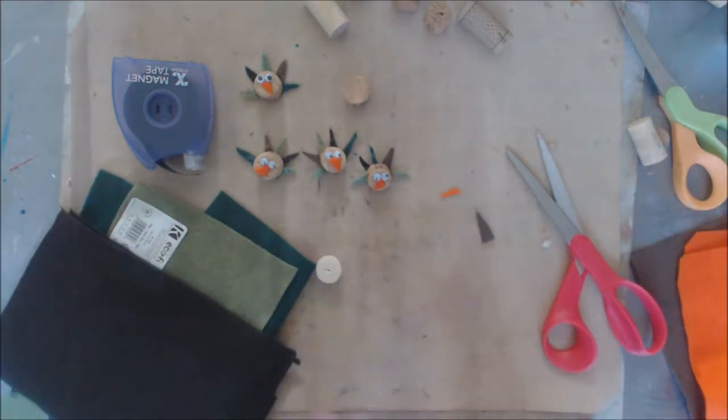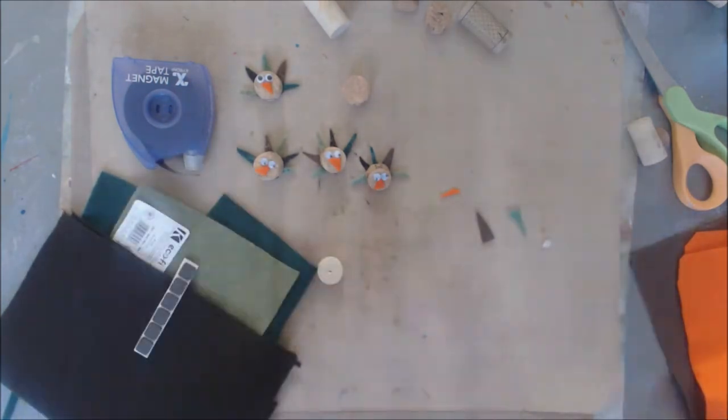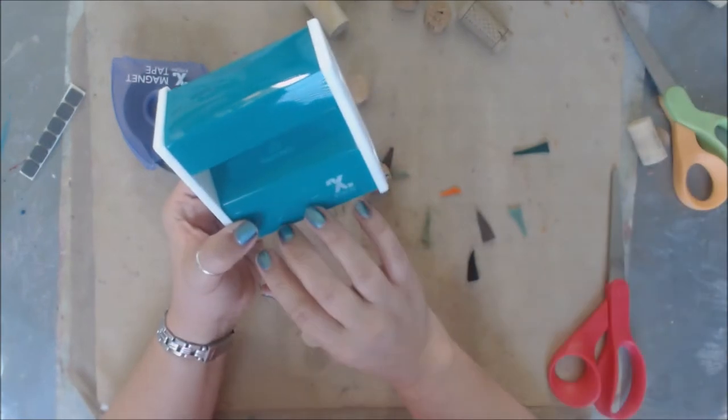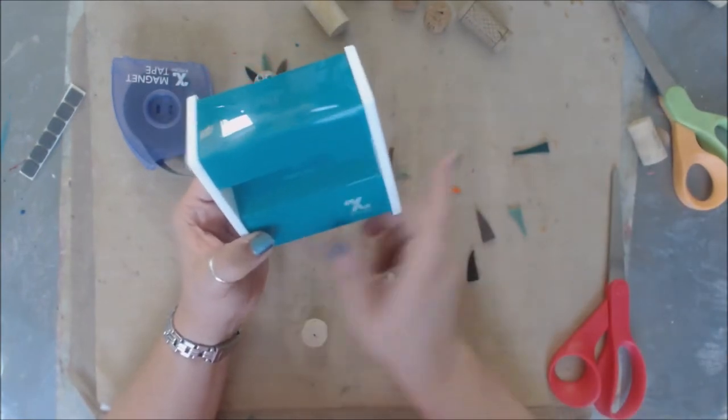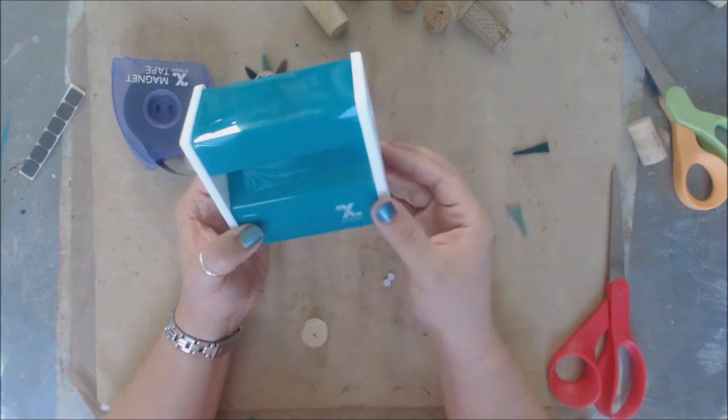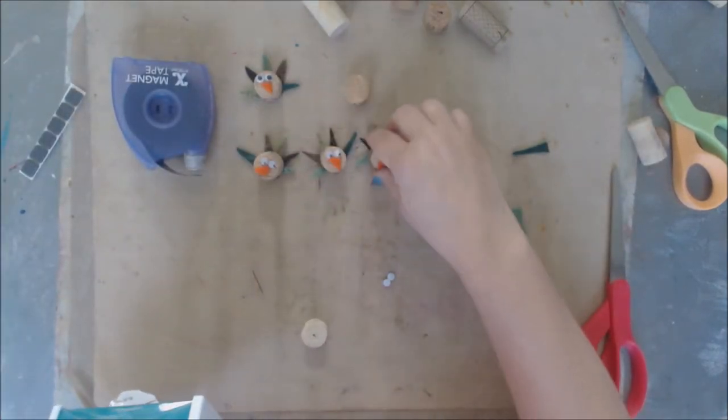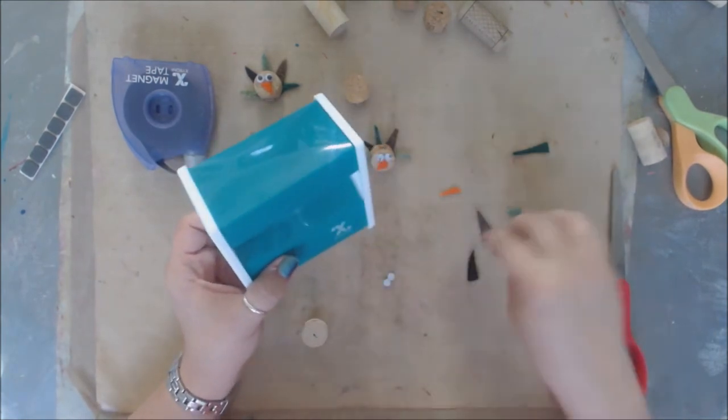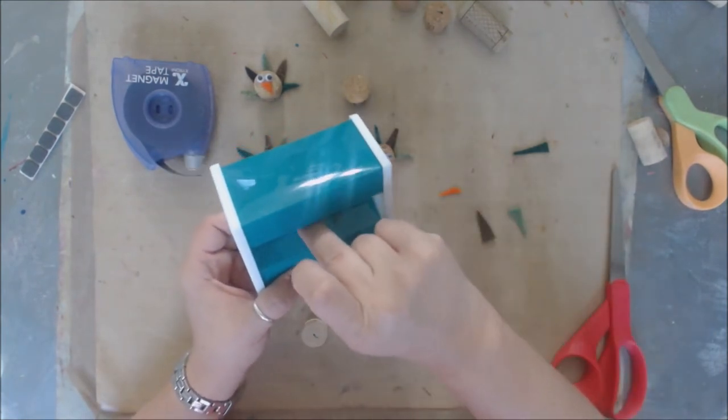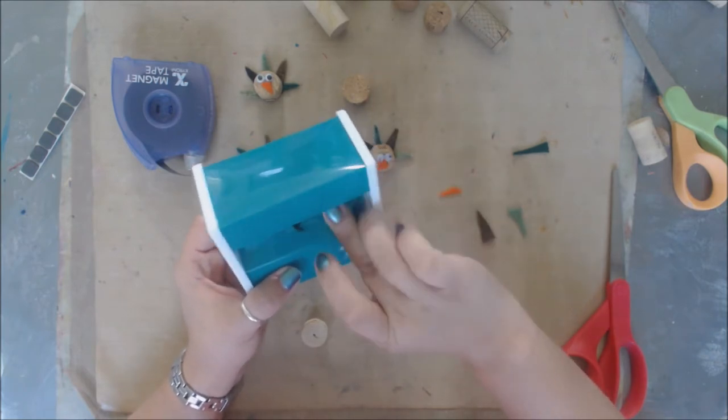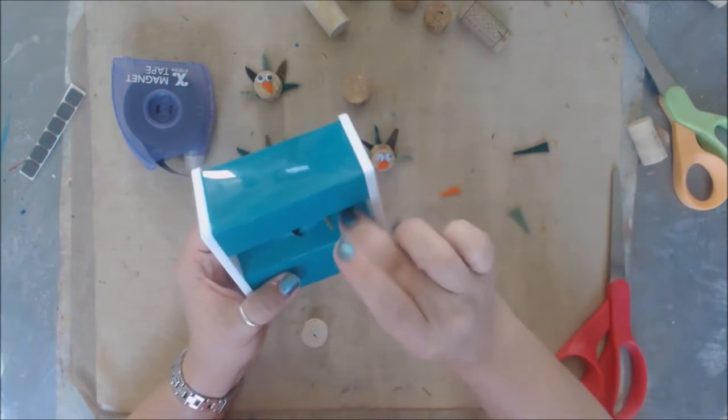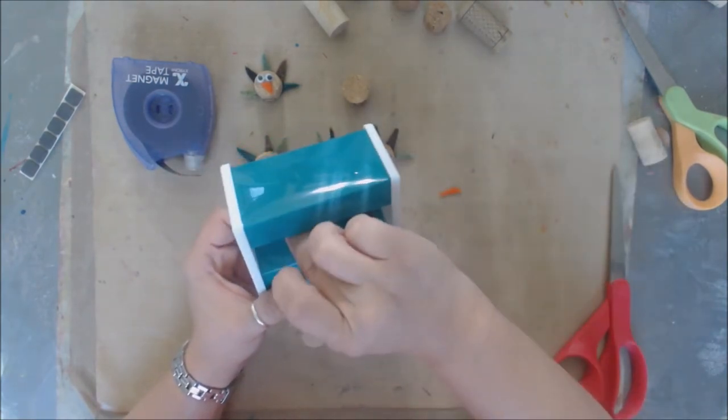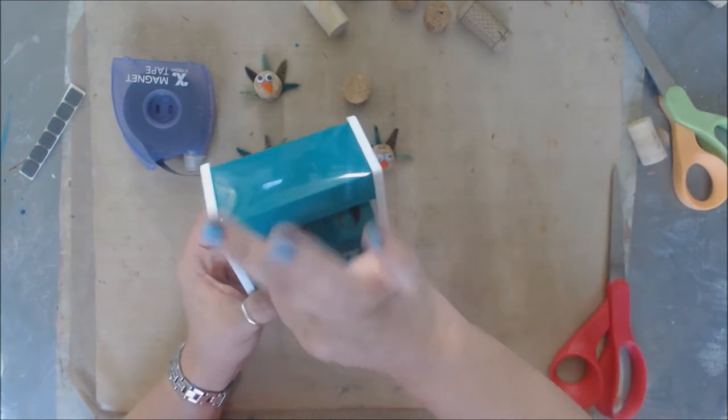What I have right here is a Xyron three inch sticker maker. And when I did all the turkeys, I actually ran all of the colors in at one time. But for just doing a single turkey, I'm just gonna run them all at the same time. I take the widest, the bottom of the triangle for the feathers, and run it through. So just take the bottoms of the triangles, stick them in, and then I'm gonna take my little nose, stick it in.